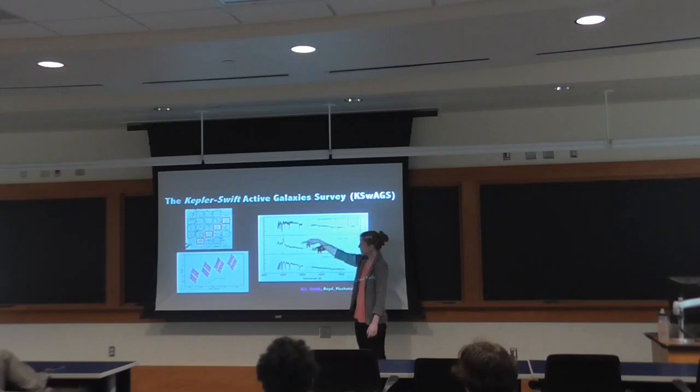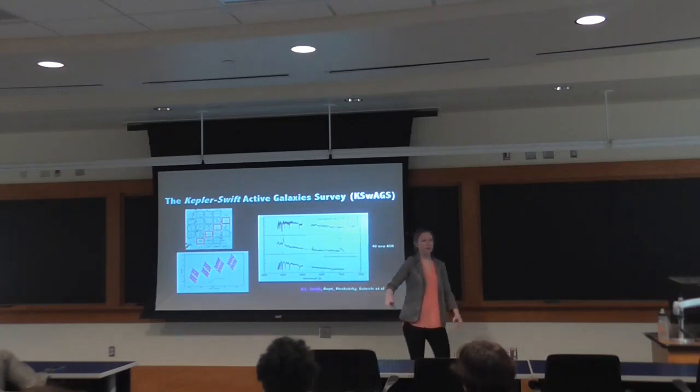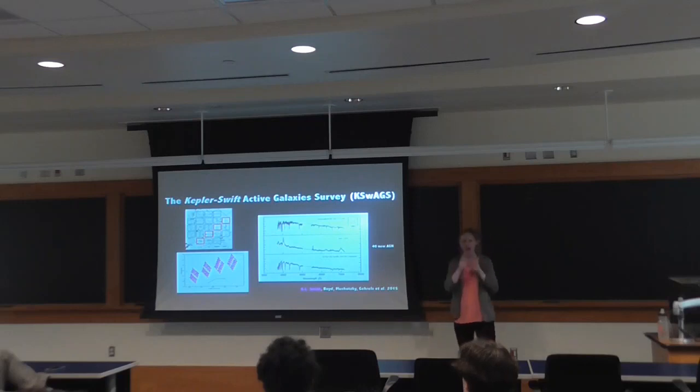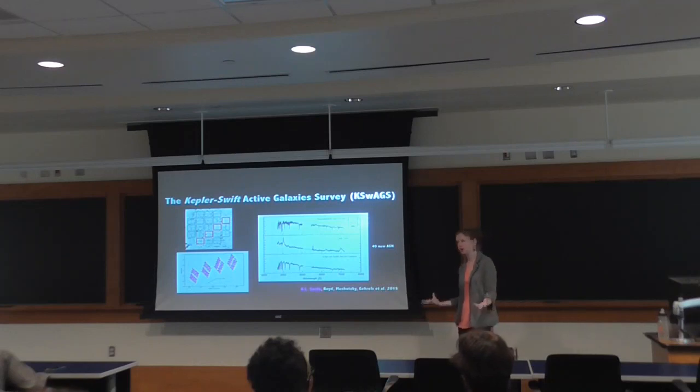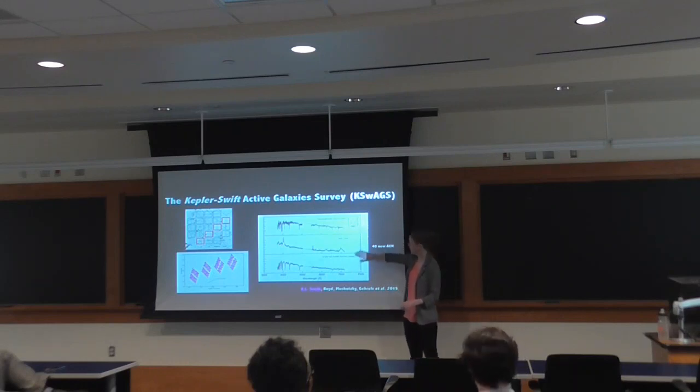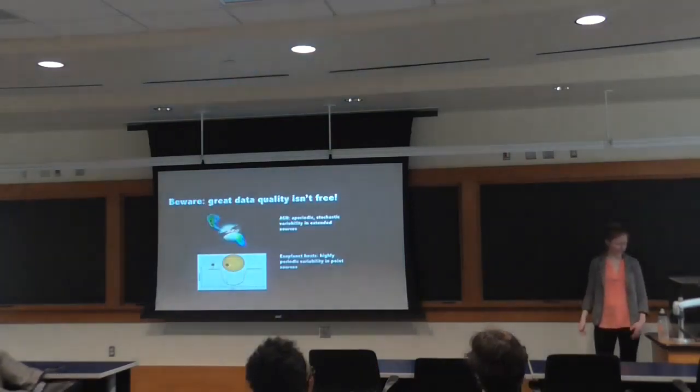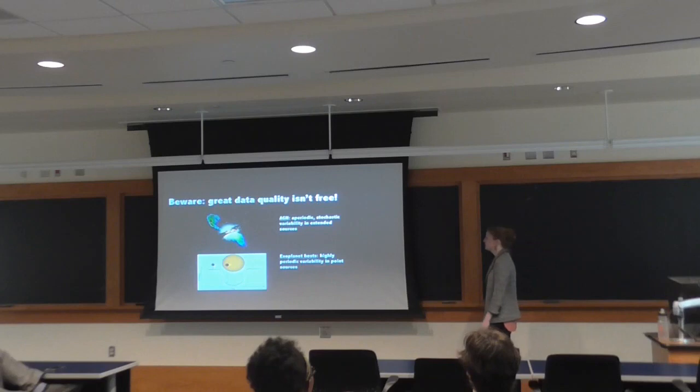So we did this. This is the Kepler field of view. You'll recognize that funny shape. Those red modules are the ones that we surveyed with the Swift X-ray telescope to look for AGN. Once we had an X-ray source, we had to decide whether or not it was an AGN because there could be a bright star or other things. So we had to follow those up with optical spectra. Some of them were stars. And some of them had these broad emission lines that we associate with AGN. So we got 40 new AGN out of this survey in the Kepler field of view. And then we can ask Kepler to monitor them.